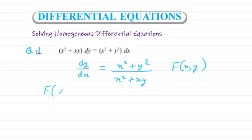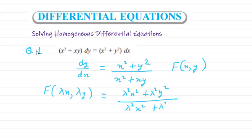To check if it's homogeneous, we substitute λx and λy in place of x and y. We get λ²x² + λ²y² divided by λ²x² + λ²xy. Taking λ² common, we get x² + y² divided by x² + xy, which is the same as f(x, y). So the equation is homogeneous.